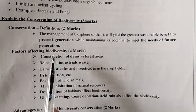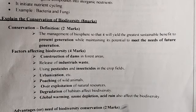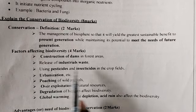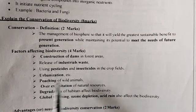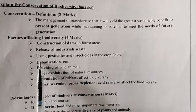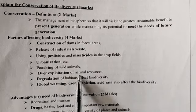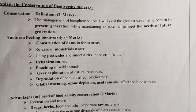The factors affecting biodiversity include: construction of dams inside and around forest areas so that wildlife cannot live there, release of industrial wastes which cause damage to living organisms, use of pesticides and insecticides, urbanization, poaching of wild animals, overexploitation, degradation, global warming, ozone depletion, acid rain, and so on.